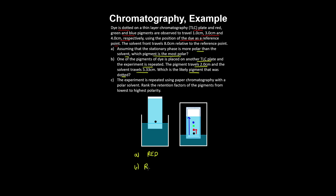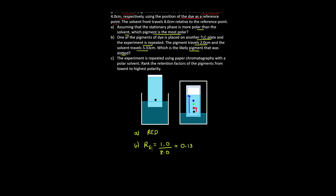You can calculate the retention factors for each pigment by dividing the distance travelled by the pigment by the distance travelled by the solvent front, and compare that with the retention factor from the second experiment to identify which pigment was likely dotted. If the experiment is repeated using paper chromatography with a polar solvent, ranking the retention factors of the pigments from lowest to highest polarity: the red pigment will travel the furthest, so the retention factor of the red pigment will be the highest.